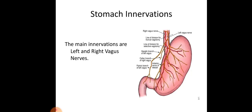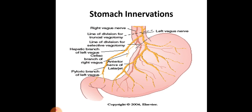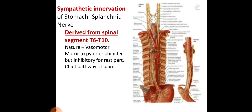The innervation of the stomach: the stomach is supplied by the right and left vagus nerve — the 10th cranial nerve — providing parasympathetic innervation. The vagus nerve forms two trunks: the anterior vagal trunk, formed by the left vagal nerve, and the posterior vagal trunk, formed by the right vagal nerve. They stimulate the secretion of gastric juice. The sympathetic innervation is by the splanchnic nerve, derived from T6 to T10 spinal nerves. It is vasomotor, controls sphincter action, and is the chief pathway for pain.